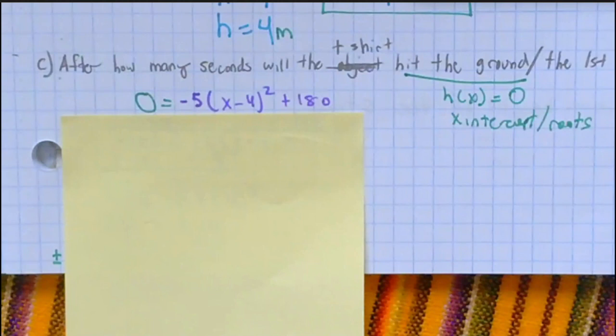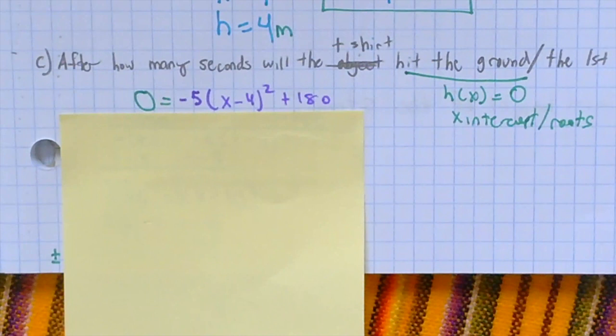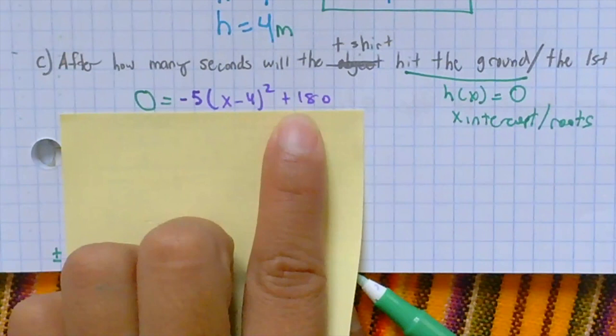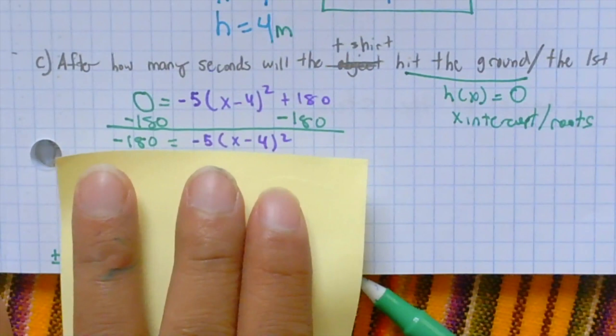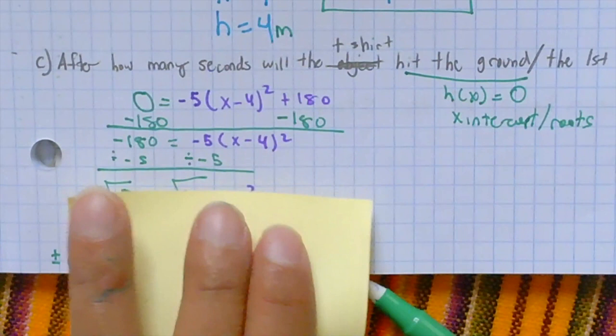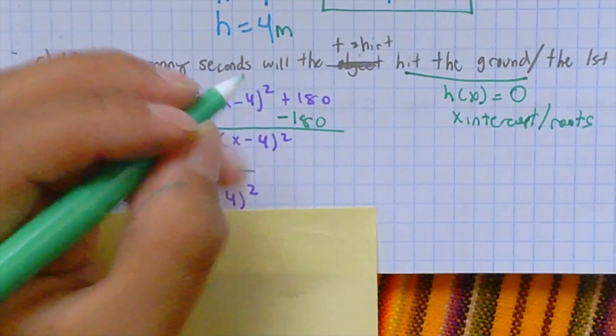Okay, so because H(x) equals zero, we substitute that whole term in for zero, and then solve for x. I want to subtract 180 to both sides. Therefore, I'm now left with -180 = -5(x - 4)². I need to get rid of that coefficient, so I divide negative 5 to both sides, resulting in 36 = (x - 4)². I want to get rid of this squared, so I do the inverse operation of that, which is by square rooting.